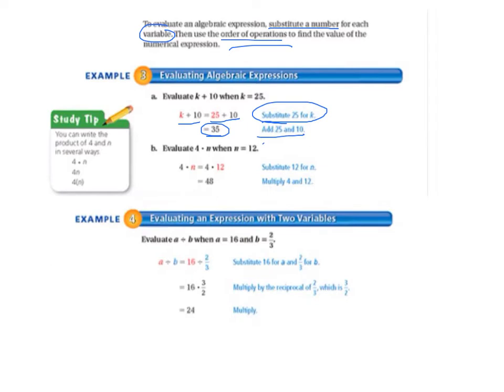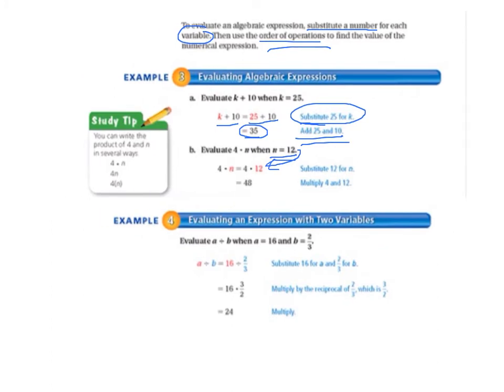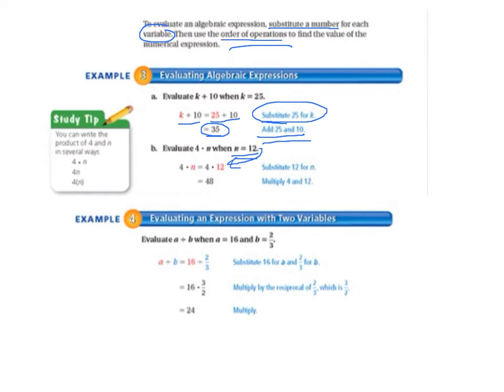Letter B says evaluate 4 times n when n equals 12. So 4 times n equals 4 times 12. So we substituted the 12 for the n. And then we multiply 4 and 12 and we get 48.